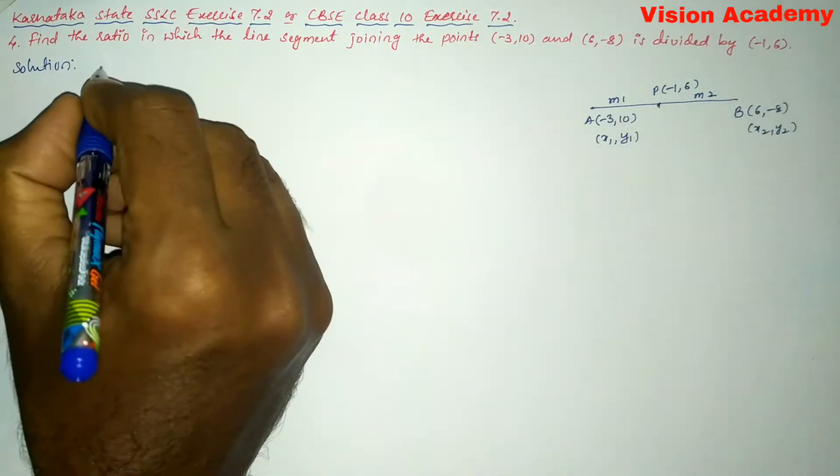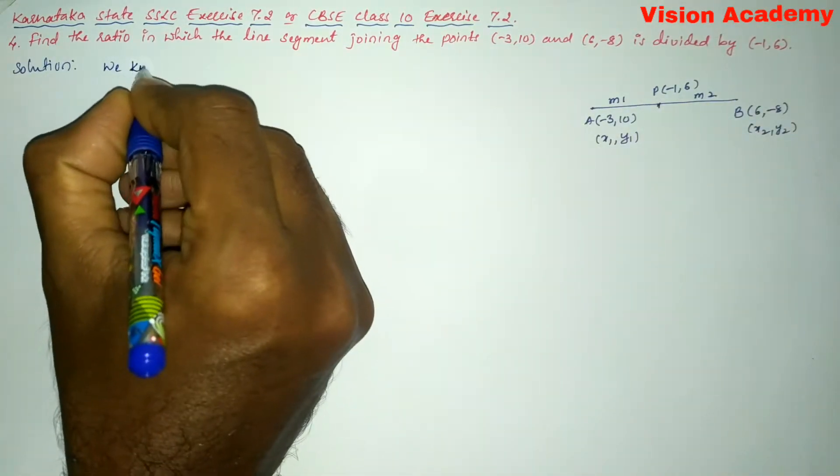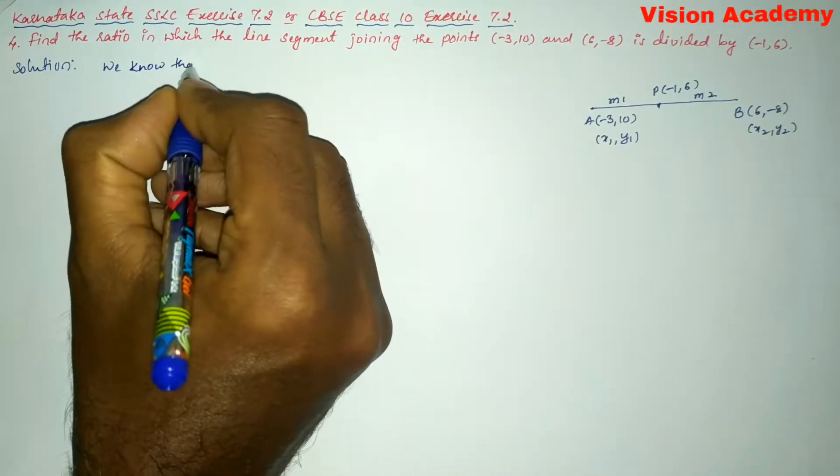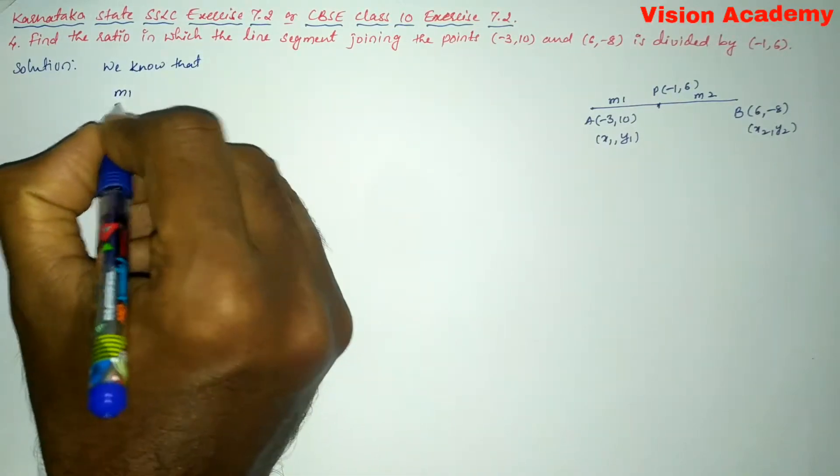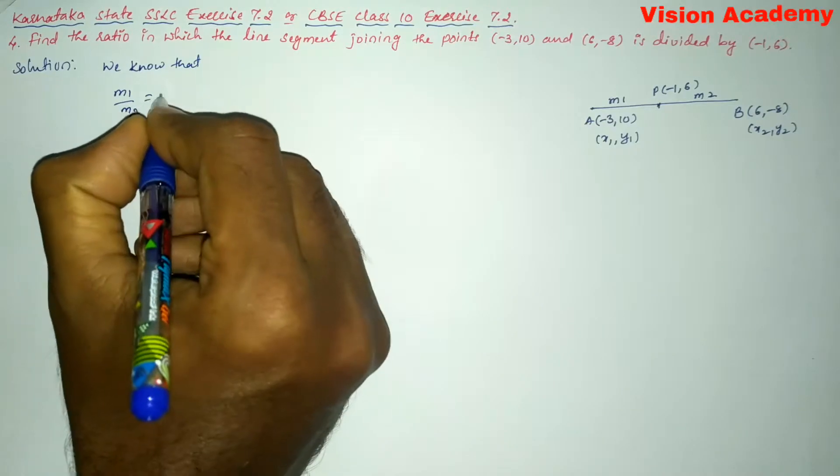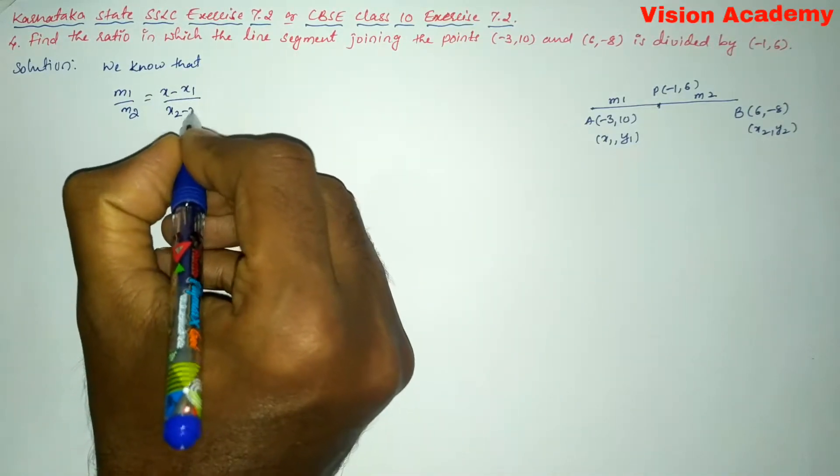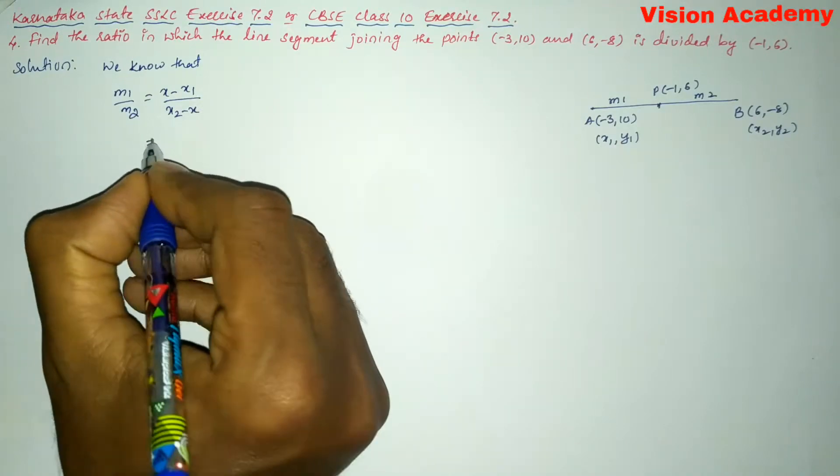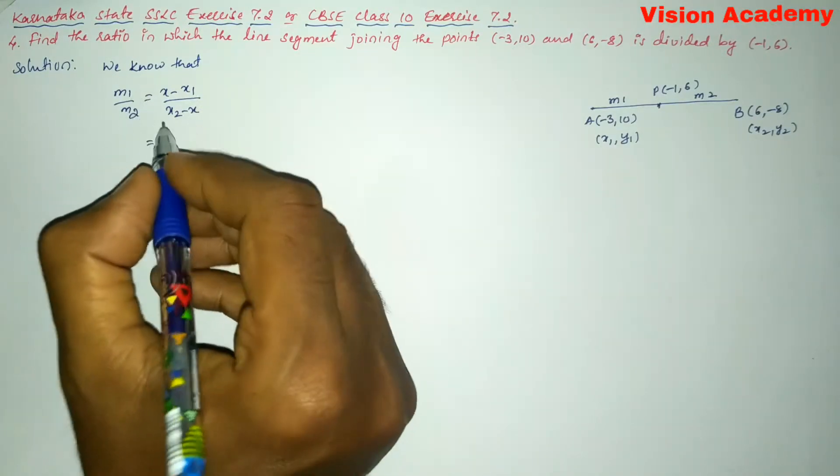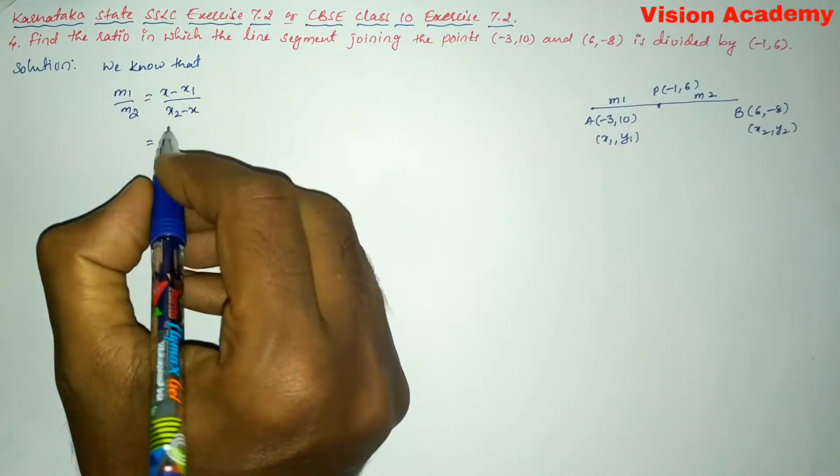Now, we will write the formula. We know that M1/M2 is equal to (x - x1) divided by (x2 - x). So, let us substitute the values of x, x1, and x2.